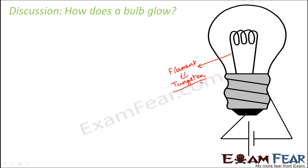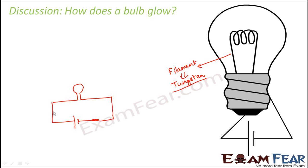Now when this bulb is connected to a circuit and the circuit is switched on — that is, the circuit is complete and made up of good conductors — current flows through the circuit. The bulb is also connected to this circuit; you have a battery here and once you switch it on, the current will flow through the circuit. The bulb is also made up of metals, so the coiled wire you see here is also made up of metals.